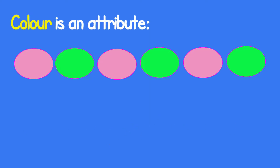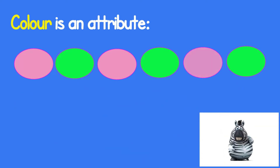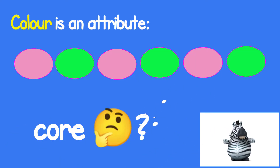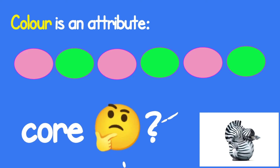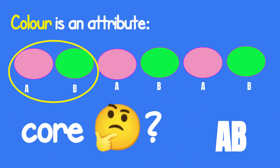Color is an attribute. Pink, green, pink, green. Can you find the core of this pattern? The core is the part that repeats. Every pattern must repeat. You found it! This is an AB pattern.